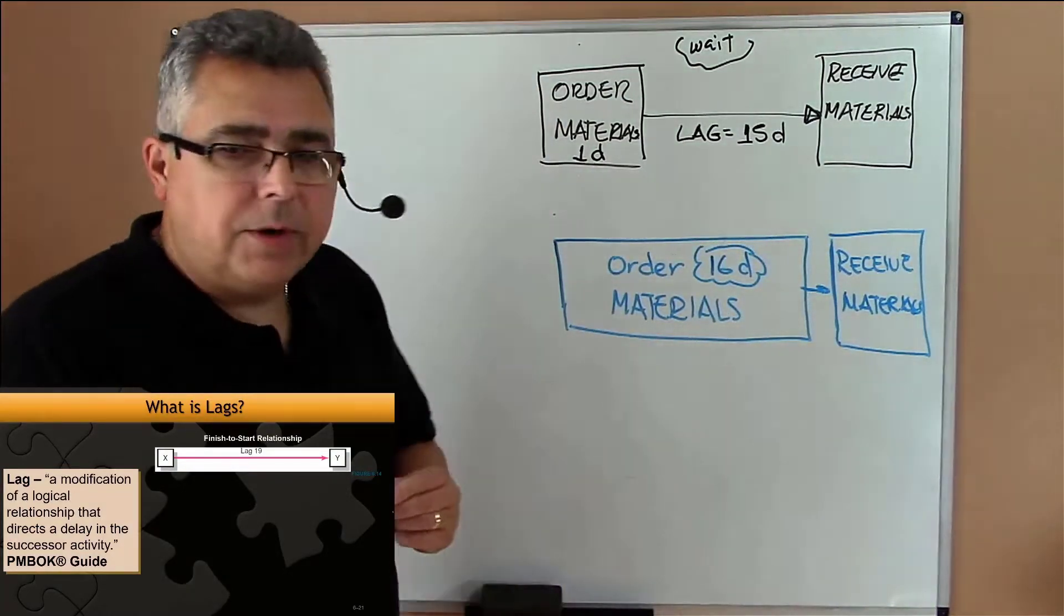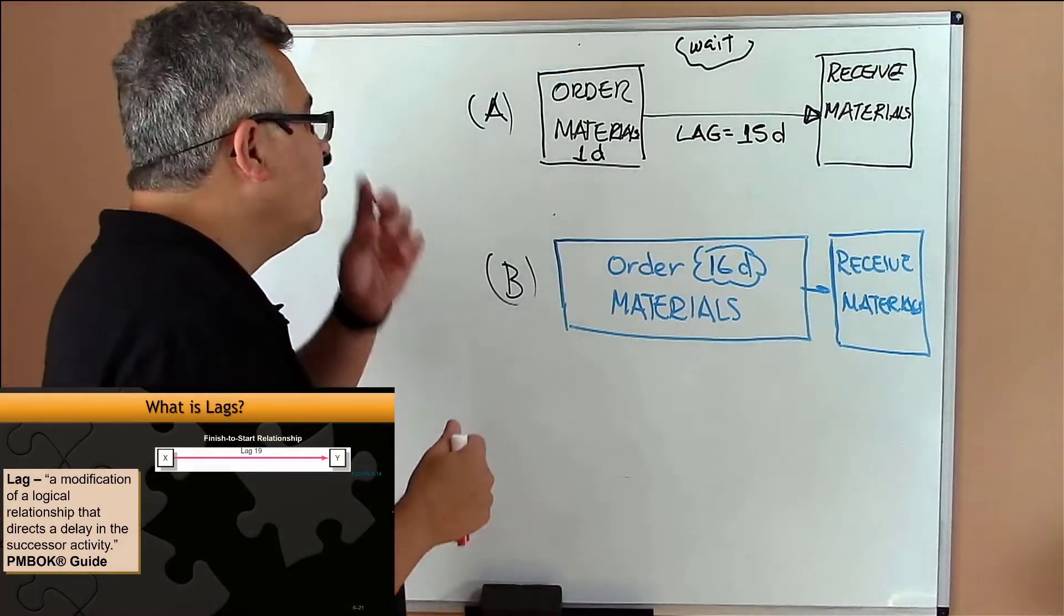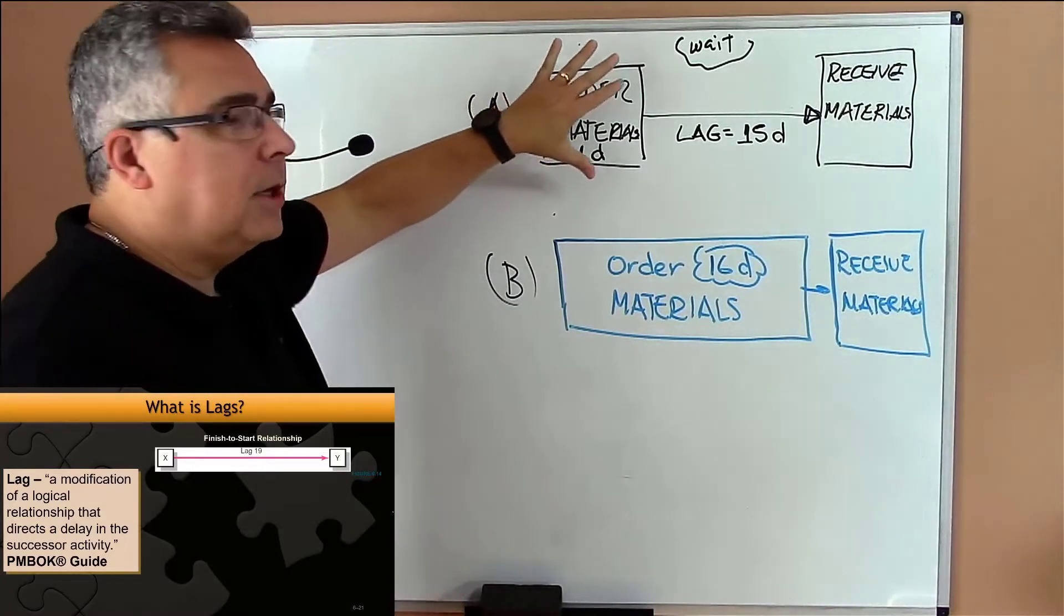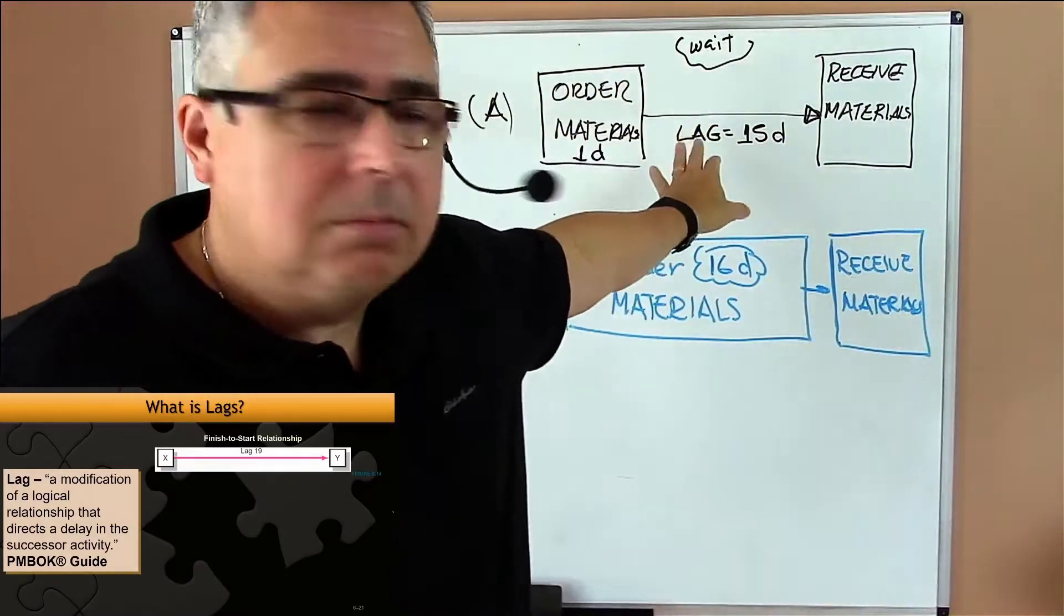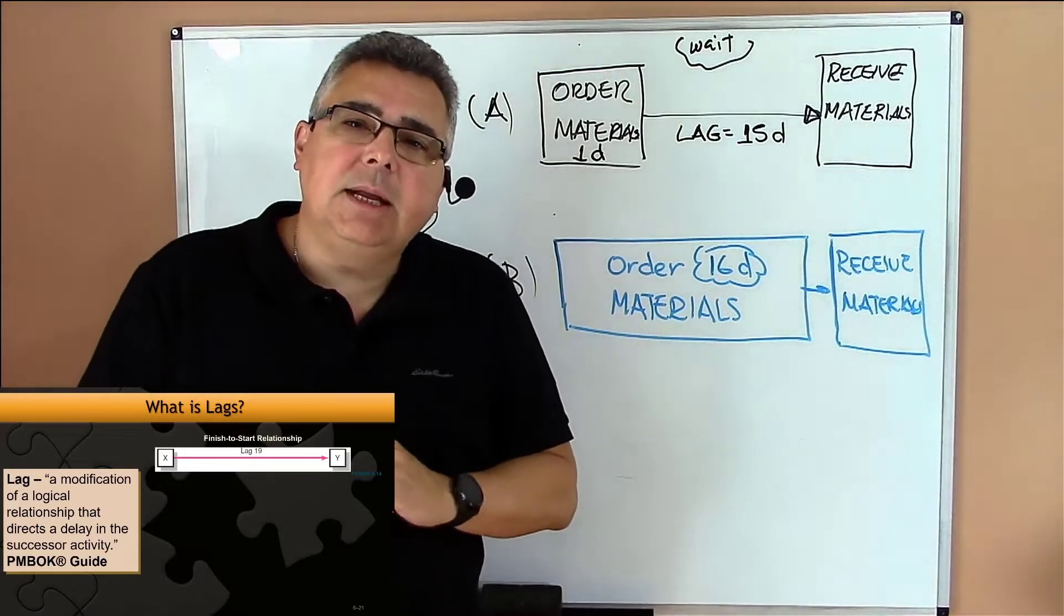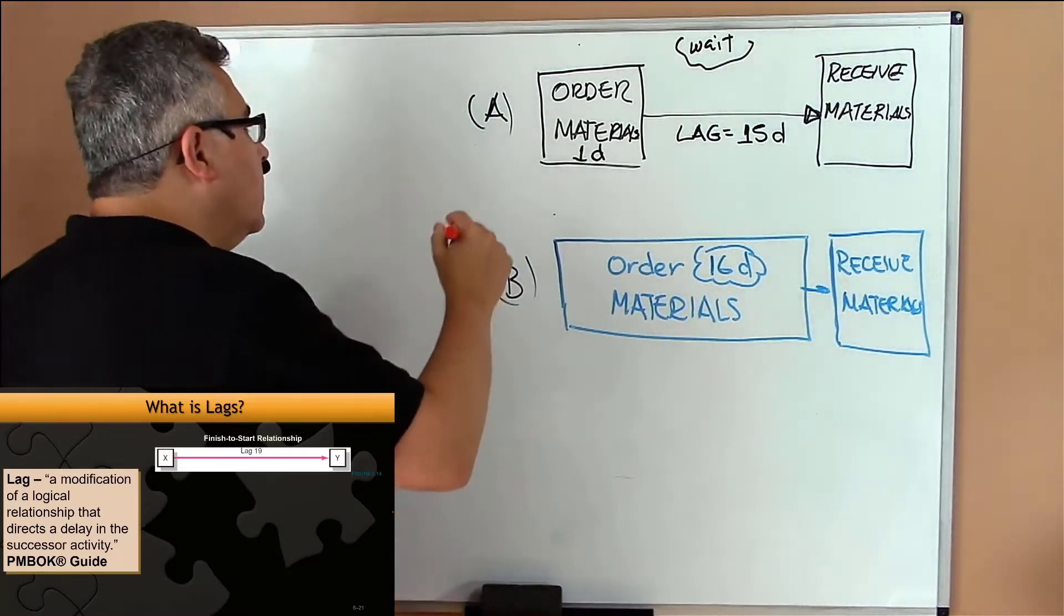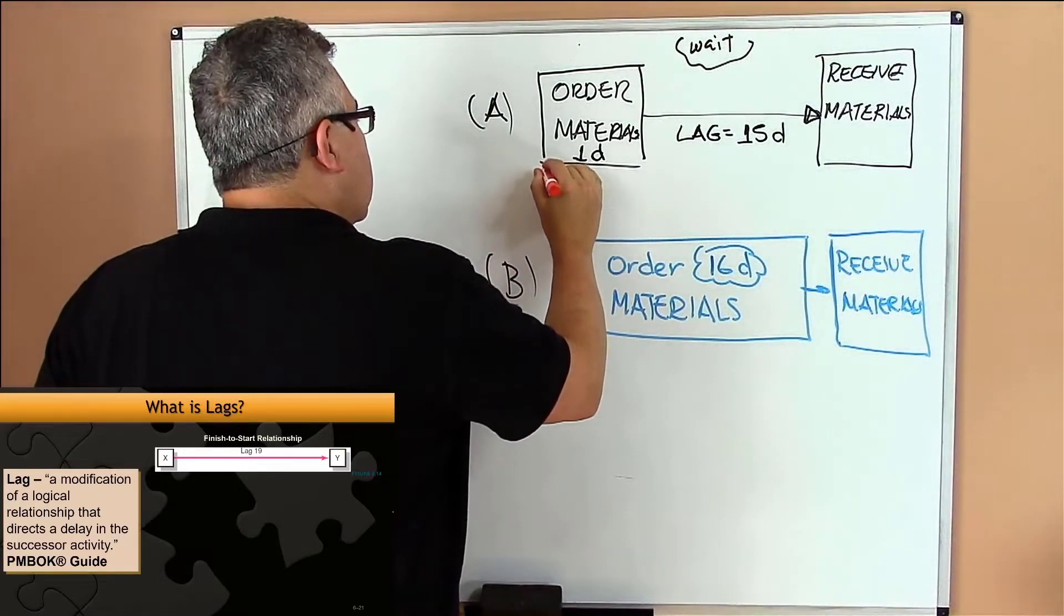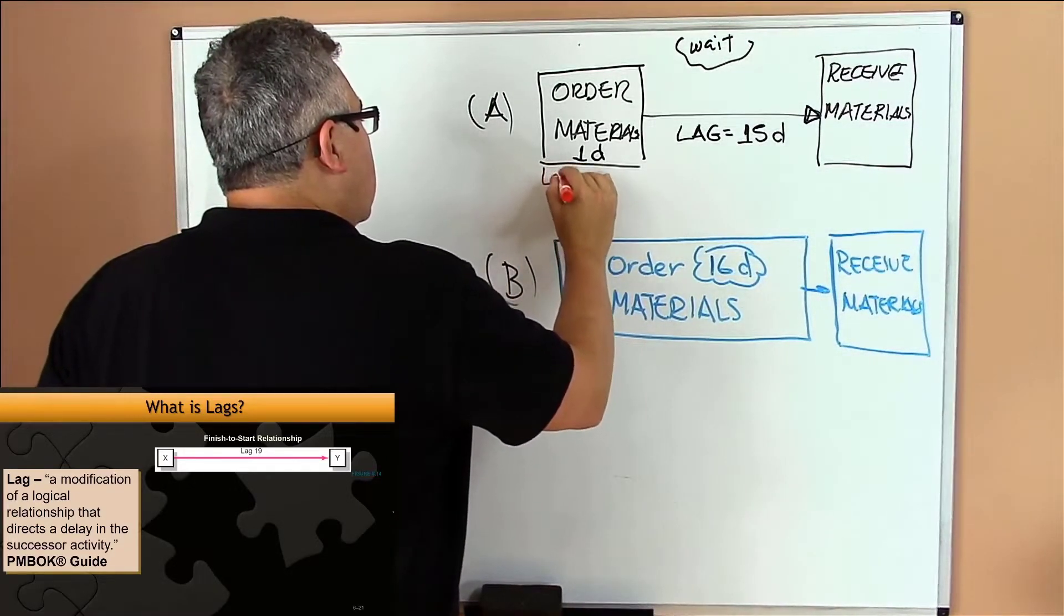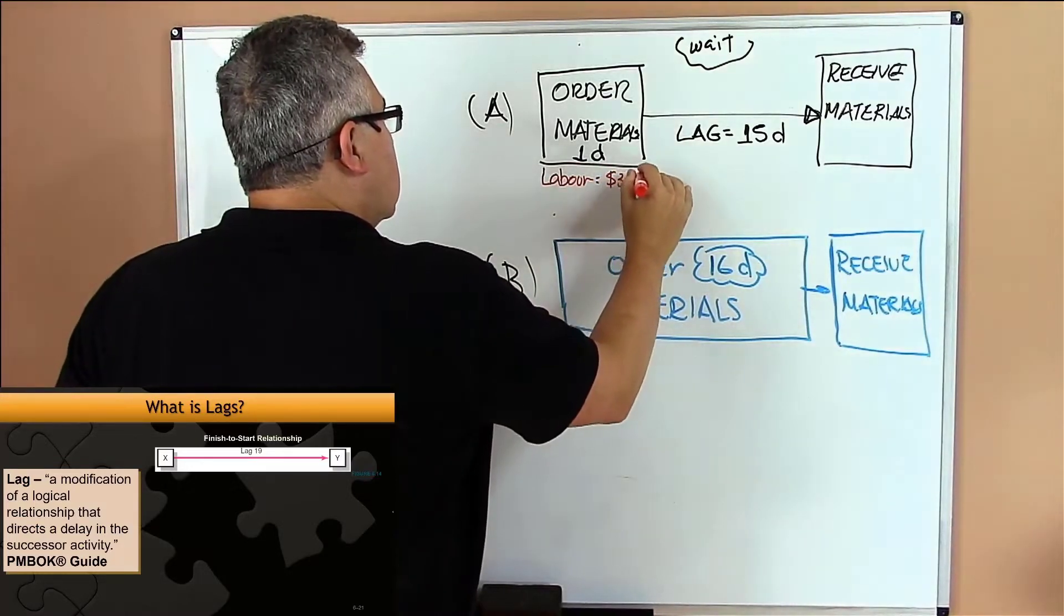What is the difference? What is the consequence? Which one is better? Let's suppose that the professional here is a purchasing analyst doing the order materials purchasing, and that purchasing analyst makes $30 an hour. That guy has a labor rate of $30 per hour.